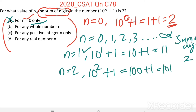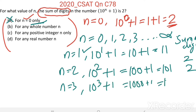When n equals 2, 10 squared plus 1 equals 100 plus 1 equals 101, and the sum of digits equals 1 plus 0 plus 1 equals 2. When n equals 3, 10 cubed plus 1 equals 1000 plus 1 equals 1001, and the sum of digits equals 1 plus 0 plus 0 plus 1 equals 2. So for any whole number n, the sum of digits in 10^n + 1 is 2. This is true.